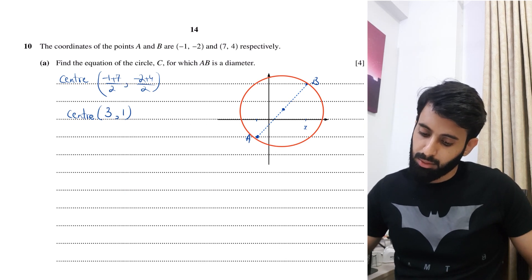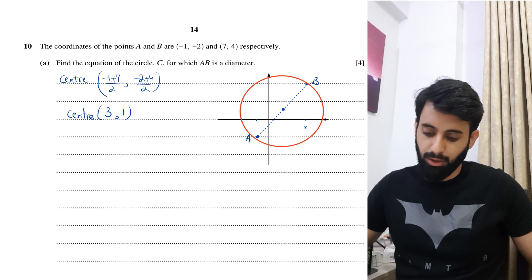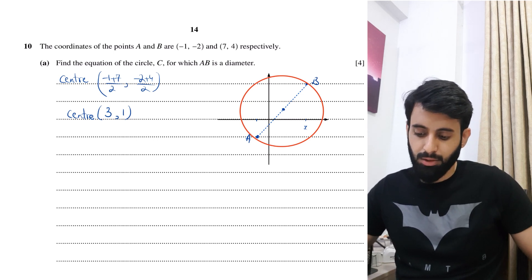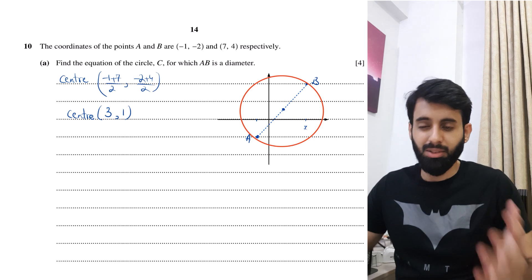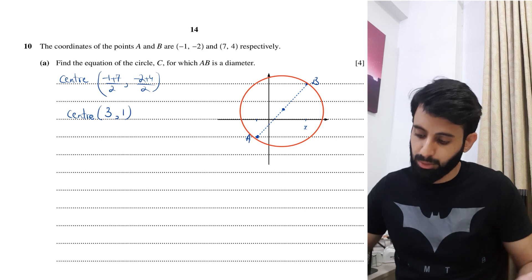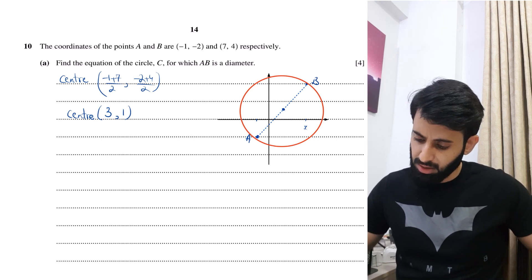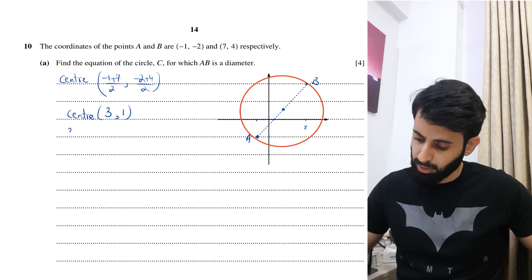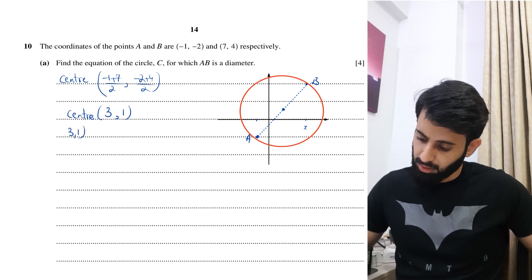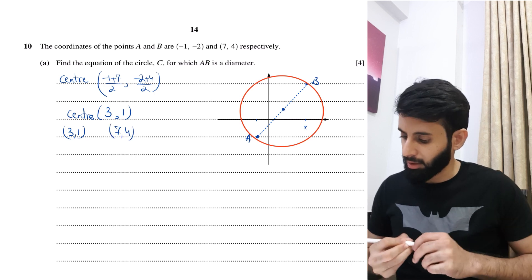Now what's left is to find the radius. You can use the center and either point A or B to find the radius, or find the length of AB and divide by 2. I'm going to use the center 3, 1 and the point B at 7, 4.